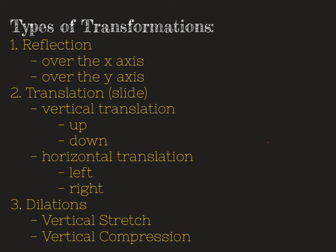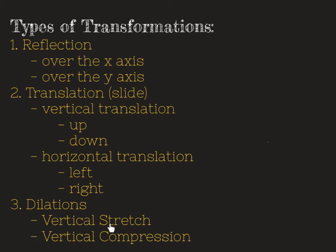Up first you can see that we have a reflection, and that's basically as if you had a mirror on your graph. There are two ways that we can reflect: you can either reflect over the x-axis or over the y-axis. We also have translations, sometimes referred to as a slide — you can translate up and down (vertical) or left and right (horizontal). We also have what's called a dilation, which is making the shape either smaller or larger — a vertical stretch where everything is pulled vertically, or a vertical compression where everything is squeezed down.